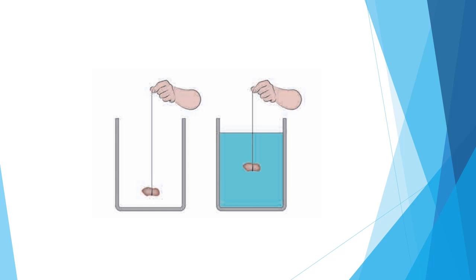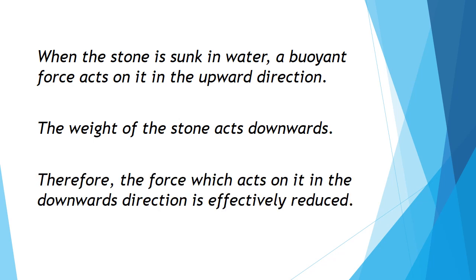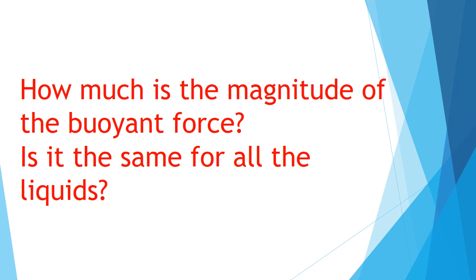While dipping the stone in water, length of the stretched rubber gets slowly reduced and is minimum when it sinks completely. What could be the reason for a shorter length of the rubber band in water? When the stone is sunk in water, a buoyant force acts on it in the upward direction. The weight of the stone acts downward. Therefore, the force which acts on it in the downward direction is effectively reduced.